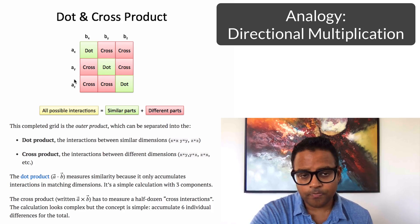If we have two vectors, a and b, they might have a few components, right? We have the x, y, and z component of each: ax, ay, az, and bx, by, bz.